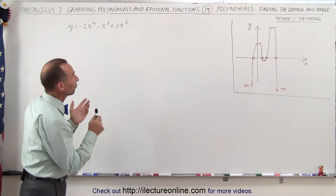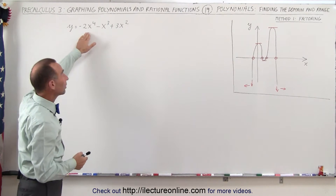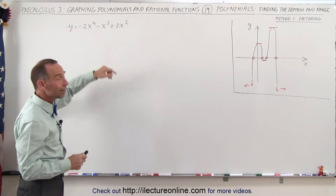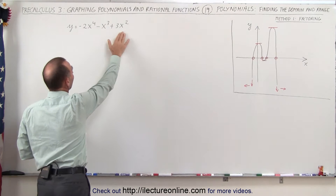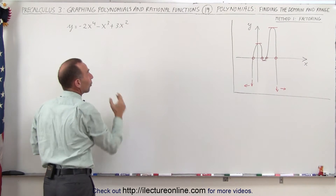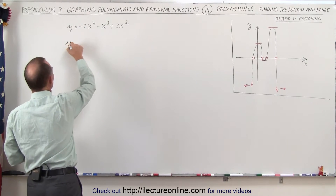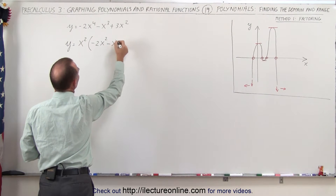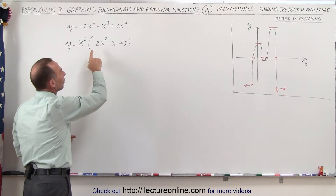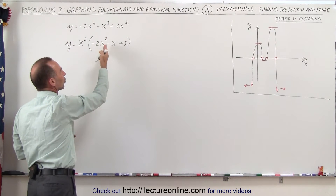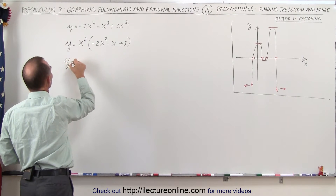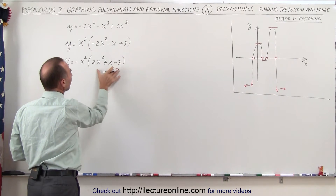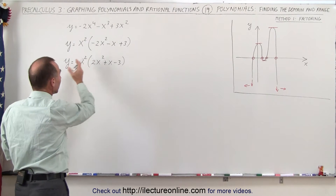Here we have the example. The first method we're going to use is what we call the method of factoring. Sometimes it looks daunting, especially when we see something to the fourth order and wonder how we can find the roots. But sometimes it's not so difficult when we realize we can factor things out. Notice that every term has x's in it and the smallest order is x squared, so we can factor out x squared. This can be written as y equals x squared times the quantity negative 2x squared minus x plus 3. We don't like negative signs in front of x squared terms, so we also factor out the negative sign.